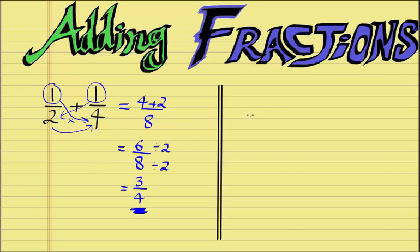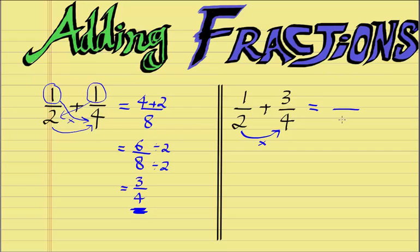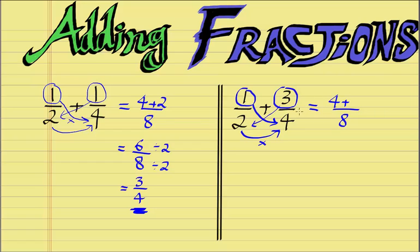Let's take a look at a second example. Say if we had 1/2 plus 3/4 this time. Same rules apply. We multiply the denominators, so 2 times 4, and we write that in the denominator's position. Then we go ahead and multiply the numerator of the first fraction by the denominator of the second fraction. So 1 times 4 gives us 4. We then carry our addition sign, and then we multiply the numerator of the second fraction by the first fraction's denominator. So 3 times 2 is 6.